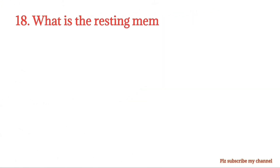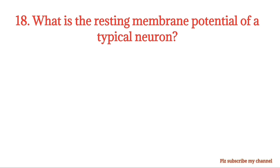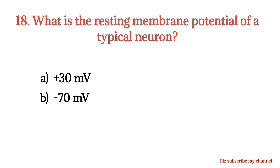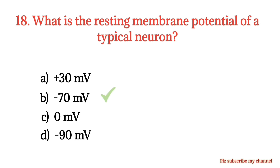MCQ number 18. What is the resting membrane potential of a typical neuron? Option A: +30 mV. Option B: -70 mV. Option C: 0 mV. Option D: -90 mV. The right option is Option B.